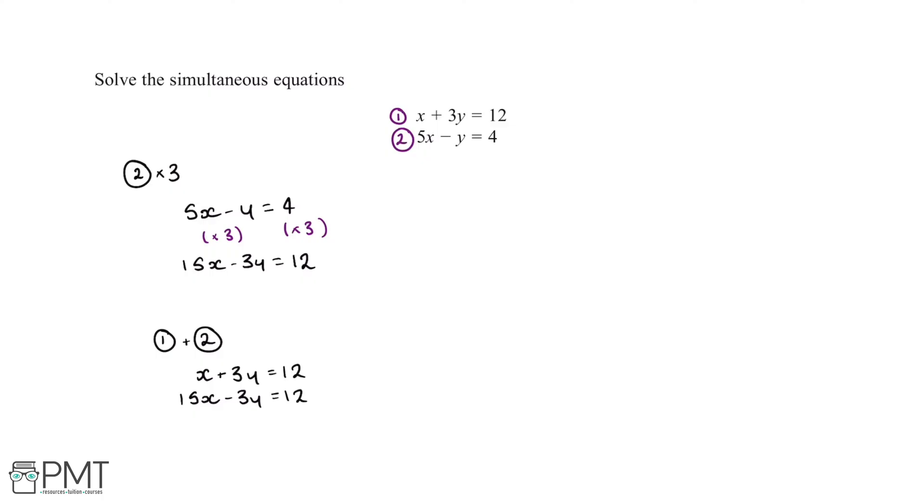So x plus 15x will give us 16x. 3y plus negative 3y will give us 0, and then 12 plus 12 gives us 24. So this tells us that 16x is equal to 24.